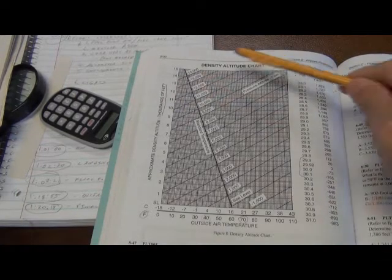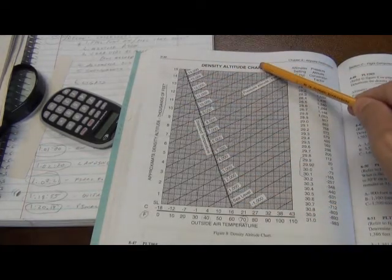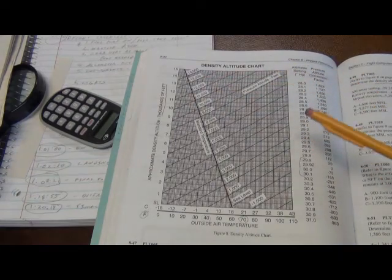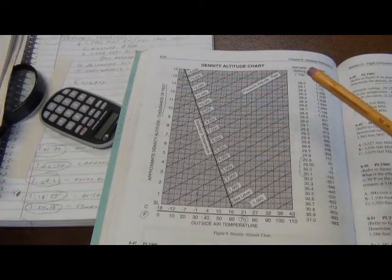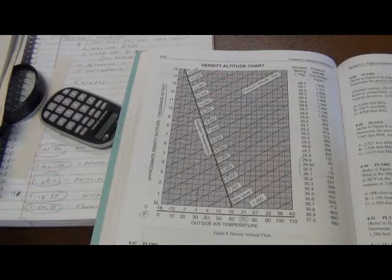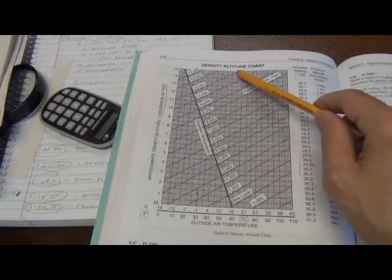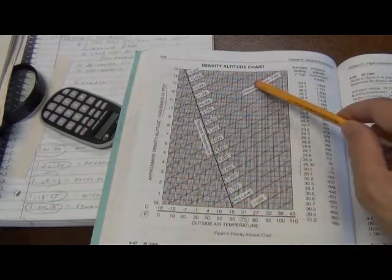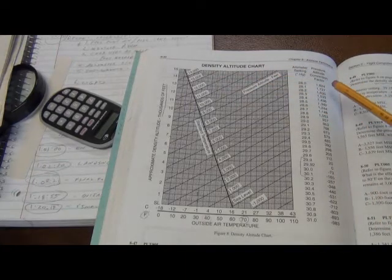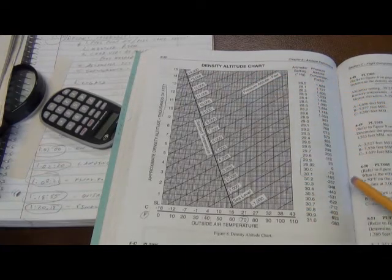First of all, when you look at this very busy density altitude chart, I break it up into two sections because they really are like a Swiss Army knife with two different tools on it. One tool is the density altitude graph. The other tool is the pressure altitude conversion table.